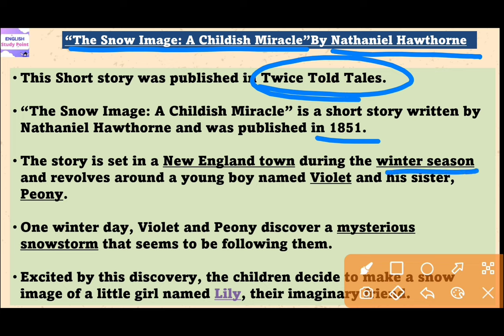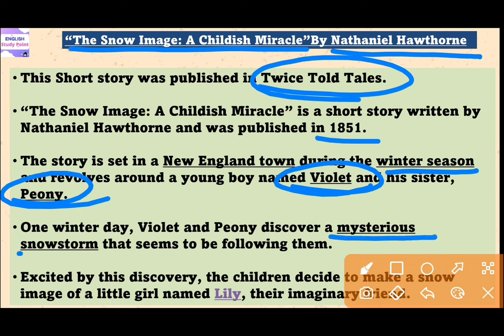The story revolves around a young girl named Violet and her brother Peony. One day, Violet and Peony discover a mysterious snowstorm that seems to be following them wherever they go. They realize that every place they walk, the snow stays in the exact shape of their footprints, creating beautiful and intricate — meaning complex — images.